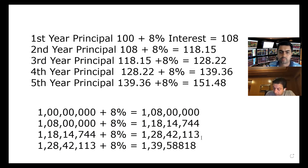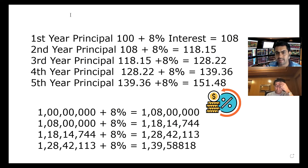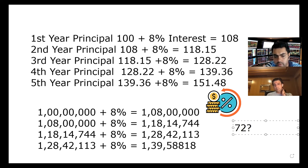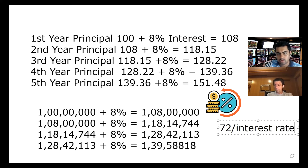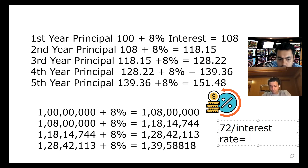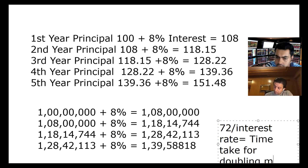The Rule of 72 will tell you how many years your money will double in. You do 72 divided by the interest rate. So: 72 divided by interest rate equals the time taken for doubling your money — in years.